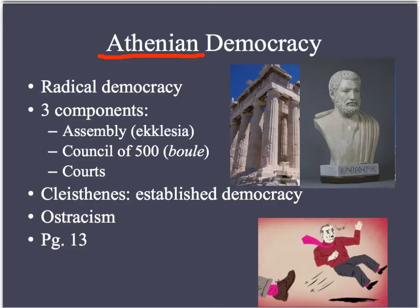Obviously, we know democracy started in ancient Greece, specifically in the city-state of Athens. We have a democratic system today in America, but you're going to see some similarities and differences from the way it worked back then and the way it works today. The first difference we have to understand is that this democracy was called a radical democracy, or a direct democracy.